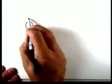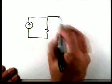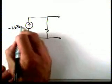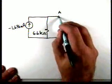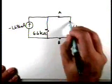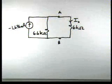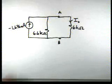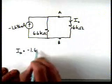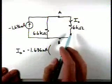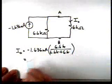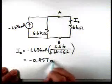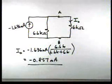Drawing our Norton equivalent: I short-circuit is minus 1.636 milliamps, R_N is 6.6 kilohms, with terminals A and B. We reconnect the 6-kilohm resistor and there's our current I0. Using current division, I0 equals minus 1.636 milliamps times 6.6k over the total, placing 6.6k in the numerator. I0 is minus 0.857 milliamps, meaning the current is actually flowing in the opposite direction from what we defined.